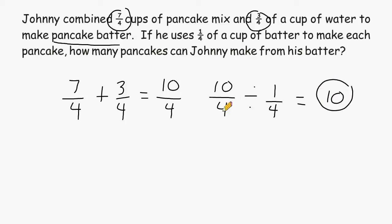Now, we could go through all of the steps by writing 10 quarters and multiplying by the reciprocal. And if we do this, these 4's are going to end up being cancelled out, and that is going to leave us with 10 over 1, which can be simplified to 10 wholes.